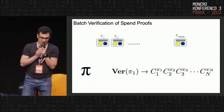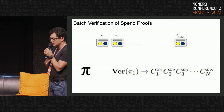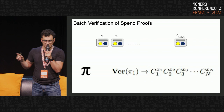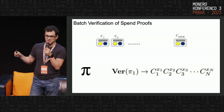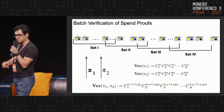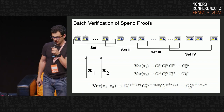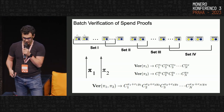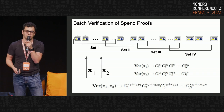The most computationally heavy part of verifying a Spark transaction is the verification of the one-out-of-many proofs, which boils down to checking large multi-exponentiation operations. In this multi-exponentiation, the generator points are the commitments in the anonymity set. If two proofs each refer to the same anonymity set, the verification will use the same generator points, allowing us to combine them mathematically and verify two proofs together with a single multi-exponentiation.